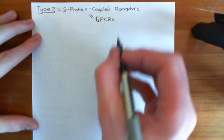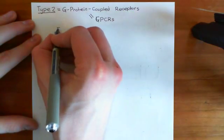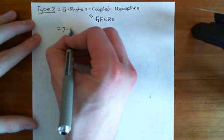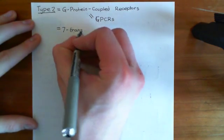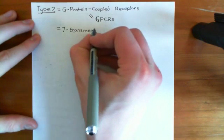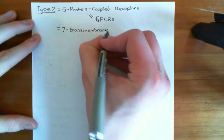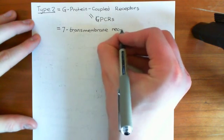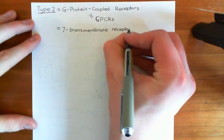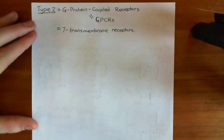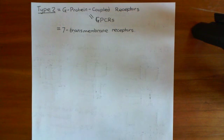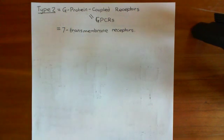G-protein-coupled receptors also have another name: they go by the name of seven transmembrane receptors. This is because their characteristic feature is that they have seven transmembrane domains — seven membrane-spanning alpha helices. G-protein-coupled receptors are by far the most common receptors in all of biology; there are 800 different G-protein-coupled receptors.